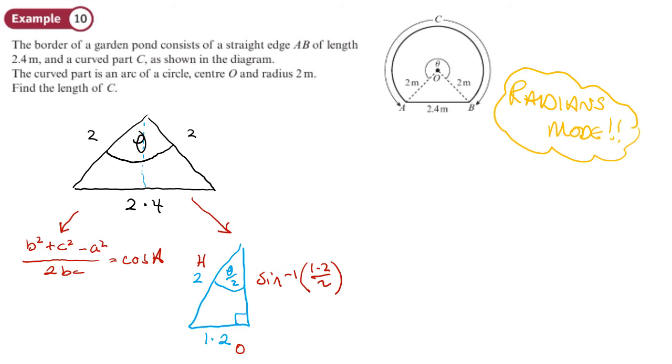And the way to change your calculator to radians mode, I've gone through this before, is shift, setup—the button that says menu—shift, setup. Then it's option number 2, it says angle setup, or angle unit, and then you press 2 again for radians. So if you need to change it back to degrees, you just do shift, setup, 2, and 1. So we'll only be using those two modes. But because the angle is in radians, or we want the angle in radians, we need to make sure that we put our calculator in radians mode.